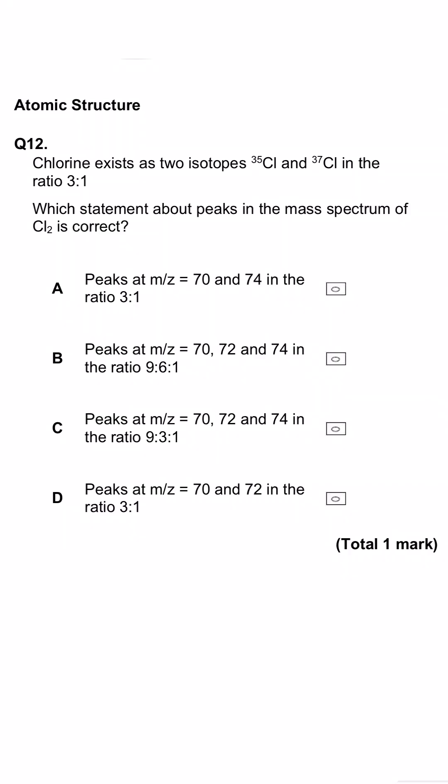Here we're being asked about the isotopes of chlorine. We're told that there are two, one with a mass of 35, one with a mass of 37, and they don't occur in equal abundance. Chlorine-35 occurs 75% of the time, or 3 out of 4, and chlorine-37 is 1 out of every 4 atoms of chlorine.